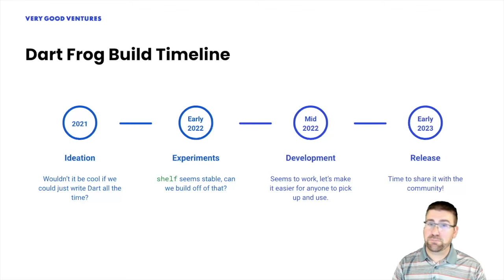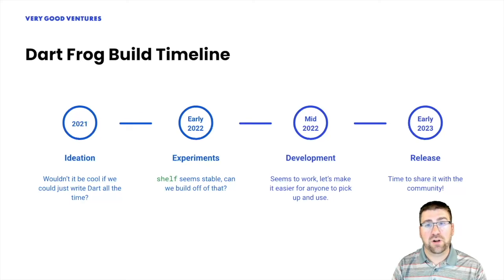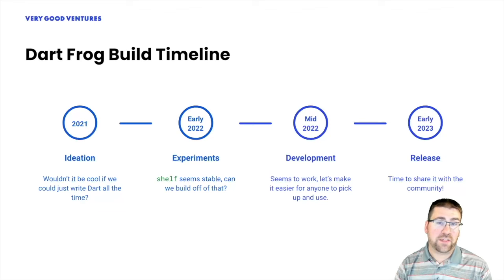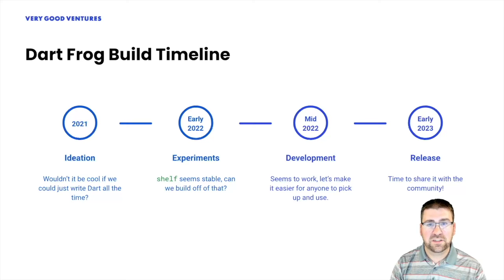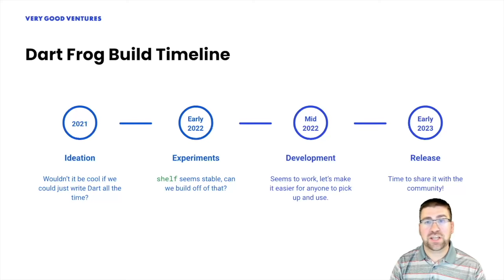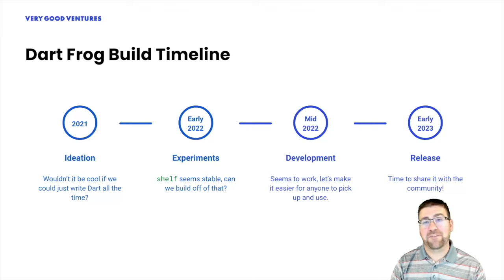Since that first pre-1.0 release, we've seen a lot of other products released as well. This includes things like our auth, gen, test, and WebSocket libraries, a DartFrog CLI tool, as well as a Visual Studio extension to make development just a bit easier. On top of that, we've seen community feature requests and changes get merged in as well. So if anyone in the audience today happens to be one of those contributors, a big thank you from me and the Very Good Ventures team for stepping up and being involved.